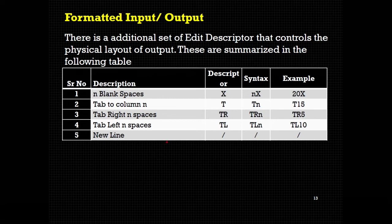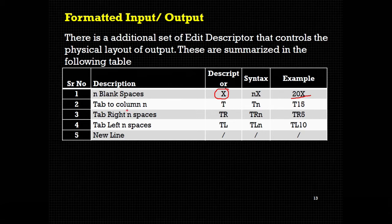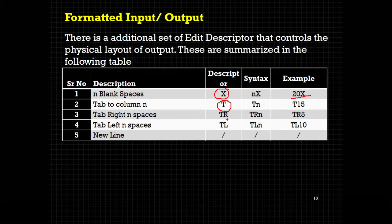In addition to i and f, there are some edit descriptors. If you want to put blank spaces, the descriptor is x — using nx you put n blank spaces, for example 20x for 20 spaces. For tab, the descriptor is t — the difference is that for spaces it is nx, whereas for tab it is tn. For tab right use trn, and for tab left use tln. For a new line, use the slash character.